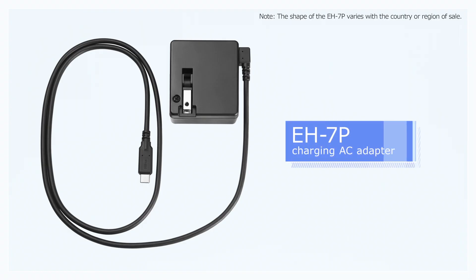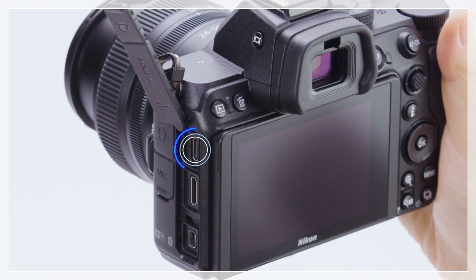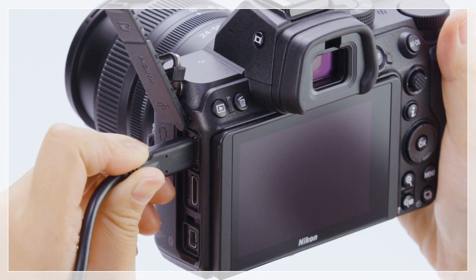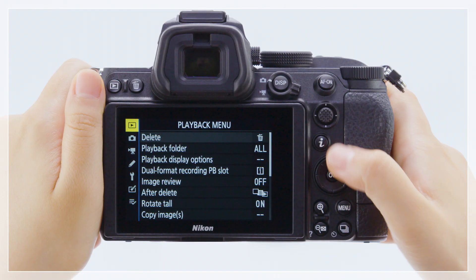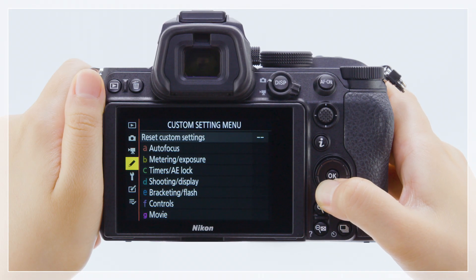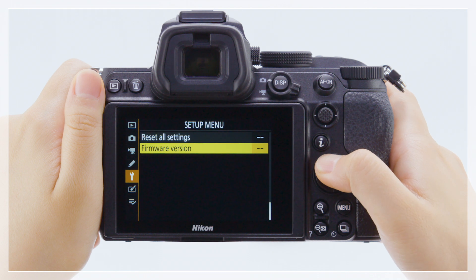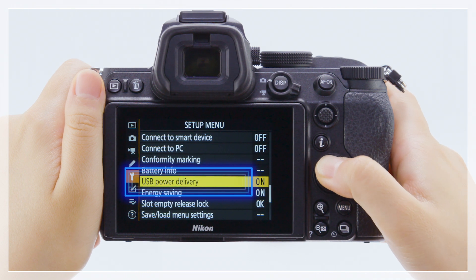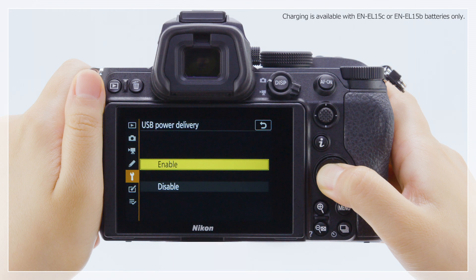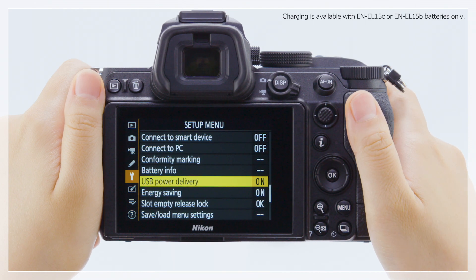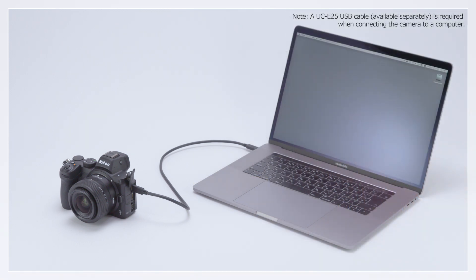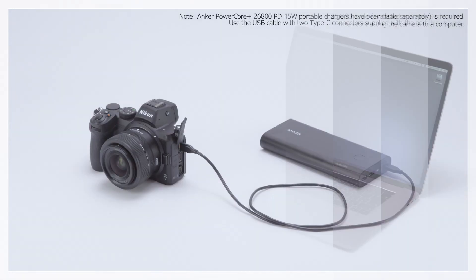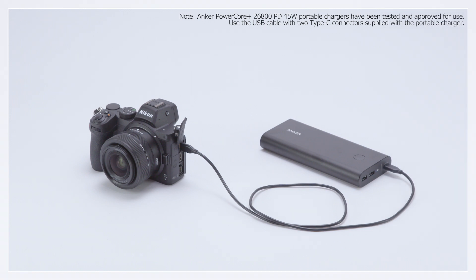When a battery is inserted in the camera, the optional EH7P charging AC adapter can be used to power the camera or charge the battery. Confirm that enable is selected for USB power delivery in the setup menu. The adapter will provide power to the camera when the camera is on and charge the battery when it's off. Computers or portable chargers with Type-C USB connectors can also be used to power the camera or charge the battery.